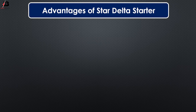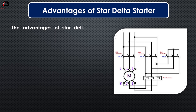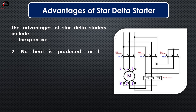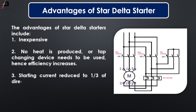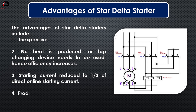Advantages of star delta starter: The advantages include: 1. Inexpensive. 2. No heat is produced and no sensing device needs to be used, hence efficiency increases. 3. Starting current is reduced to 1/3 of direct online starting current. 4. Produces high torque per ampere of line current.